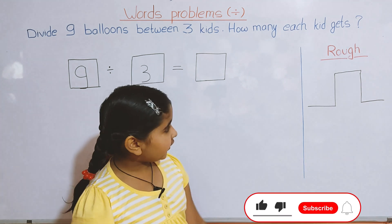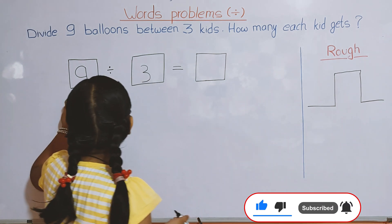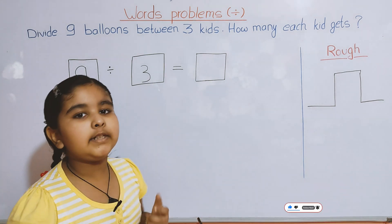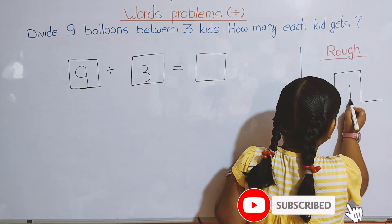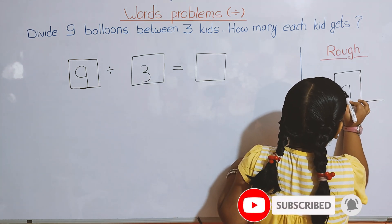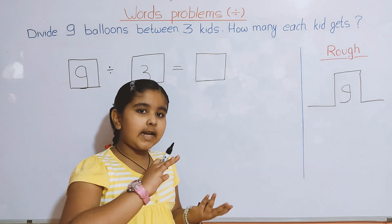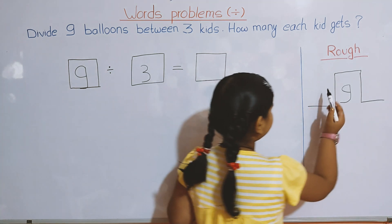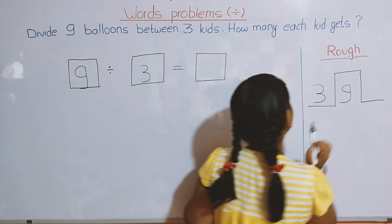Now, we put the big number inside the box. From these 2 numbers, the big number is 9, so we put 9 here. Now, 3 will go on the left side of the box.